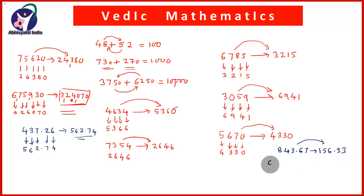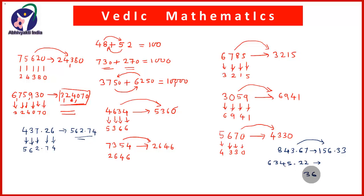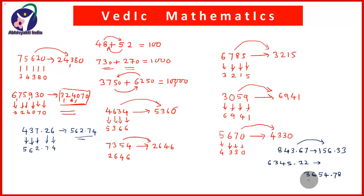Take one more example: 6,345.22. Its complement: 6 and 3 give 9; 3 and 6 give 9; 4 and 5 give 9; 5 and 4 give 9; then decimal point; 2 and 7 give 9; last digit: 2 and 8 give 10. So 3,654.78 is the complement of 6,345.22. These two concepts are very very important as far as Vedic Mathematics is concerned.